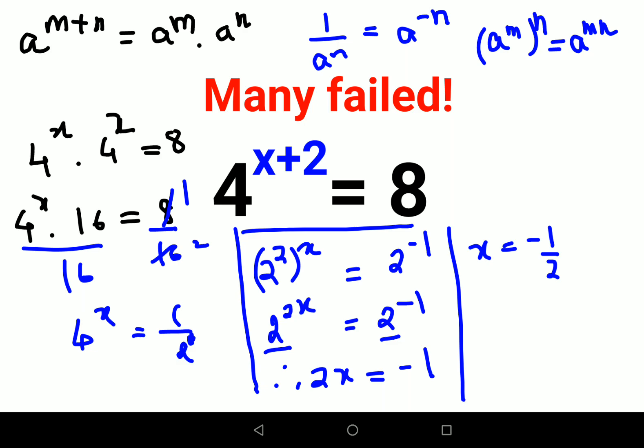This is one way of doing this particular sum. Now we can actually do the entire sum orally. Whenever you have something like this, you need to pay attention to your bases and both of them can be written in terms of 2. So 2 raised to 2 the whole raised to x plus 2 equals to 2 raised to 3.